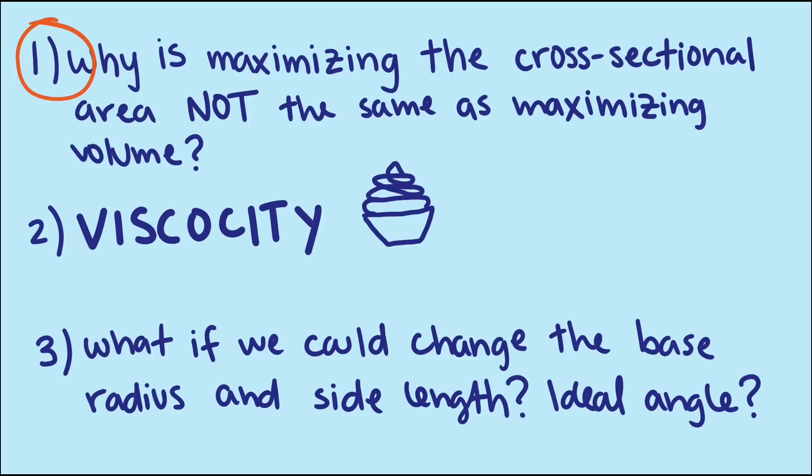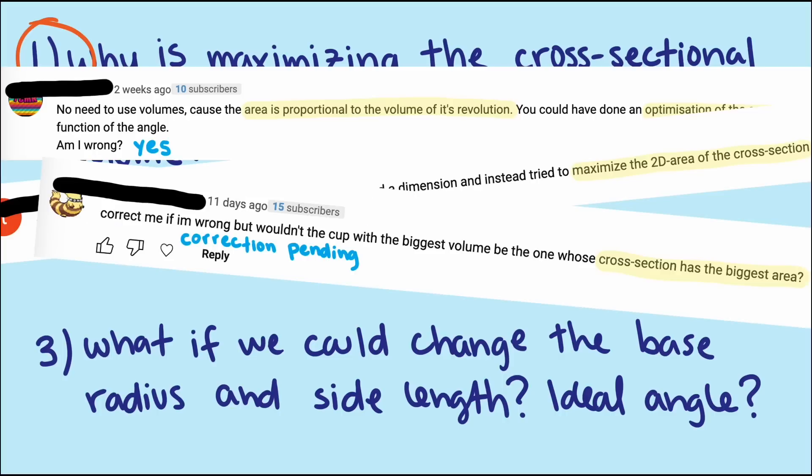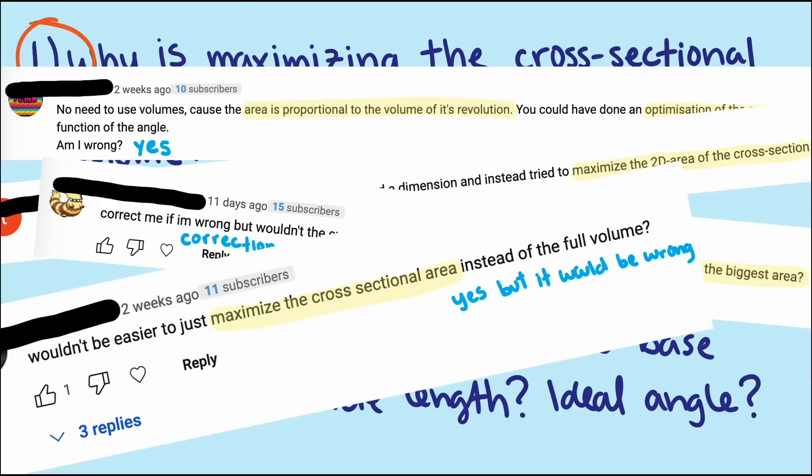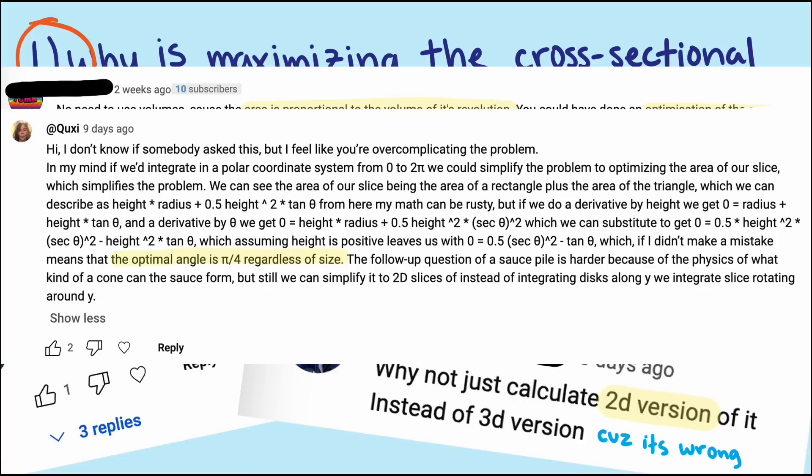Let's start with number 1. Many commenters said that we could have just maximized the cross-sectional area, and that the angle that maximized the cross-sectional area would be the same angle that maximized the volume. Some viewers even found the optimal angle to maximize the area, and found it was not the same as what we came up with, and wondered why. Well, in short, the area of the cross-section is not proportional to the volume of revolution.